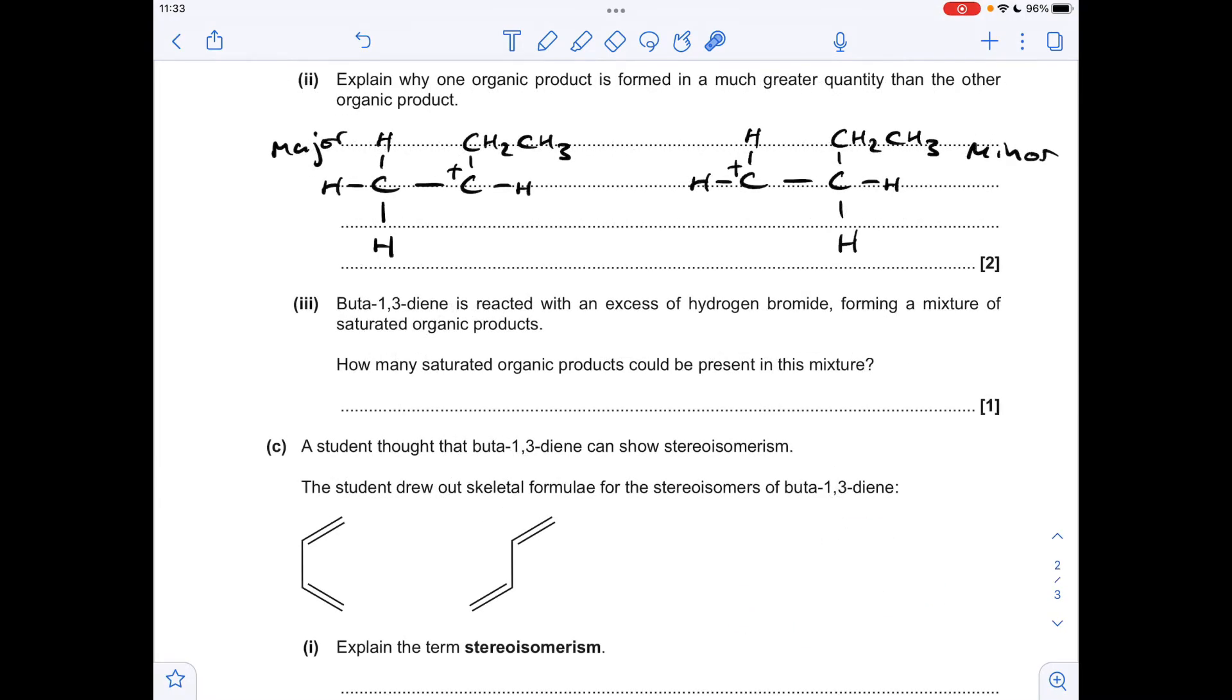Moving on to the explanation of why this major product forms, I've now got the original carbocation, the one we saw in the previous slide, but this is the other one that could have formed. If we think about the type of carbocations, the one that the major product forms from is a secondary carbocation because it's got two carbon groups bonded to the C with the plus charge. This one here has only got one carbon group bonded directly to the C plus, so this is a primary carbocation. Secondary carbocations are more stable than primary ones, and so the major product forms from the more stable secondary carbocation.